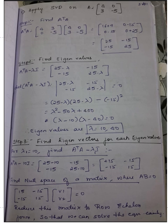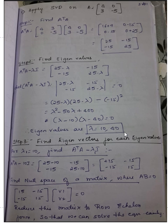To find the roots of this quadratic equation, use the formula: minus B plus or minus root of B squared minus 4AC, divided by 2A, where B is minus 50, A is 1, and C is 400. Applying that gives lambda equal to 10 and 40. You can also factor it as (lambda minus 10)(lambda minus 40) equals 0. So the eigenvalues are 10 and 40.